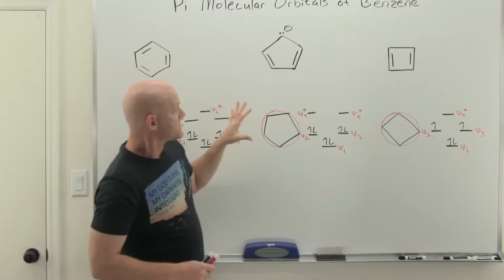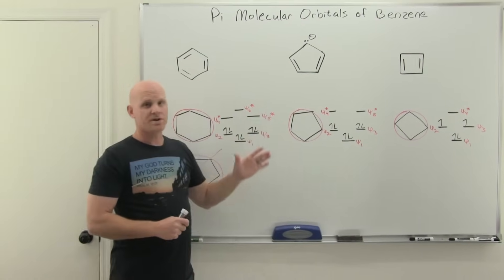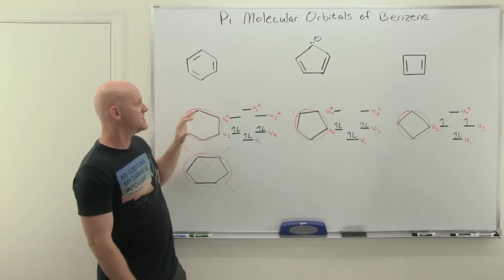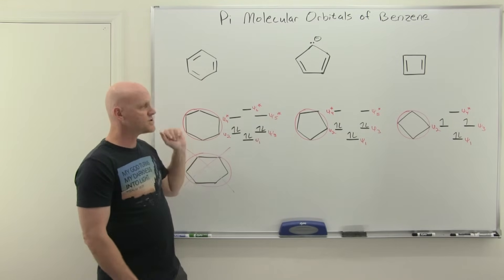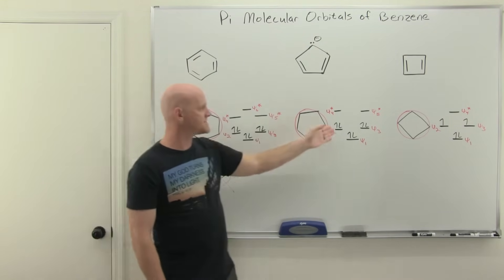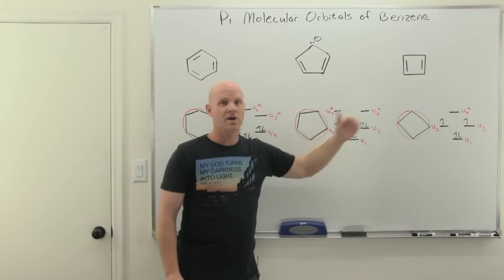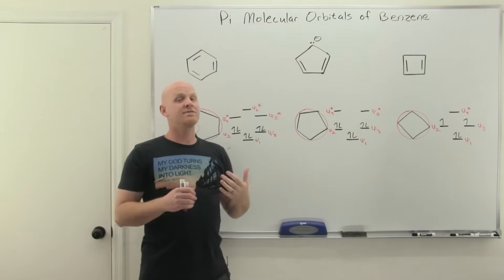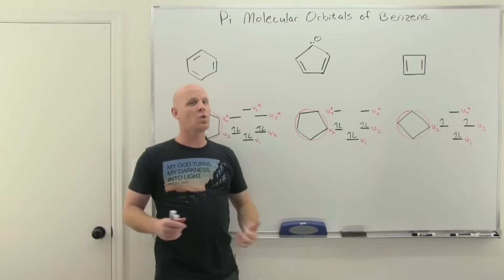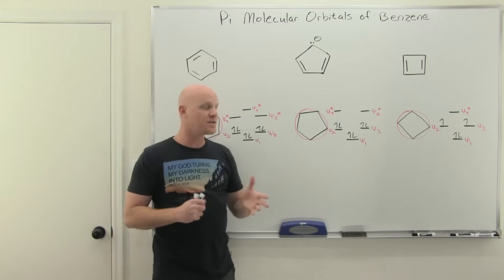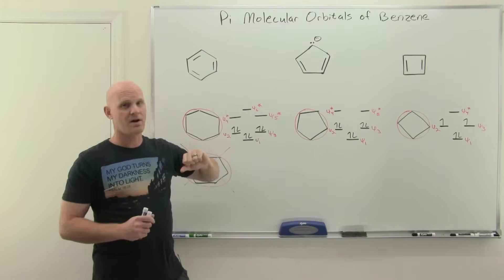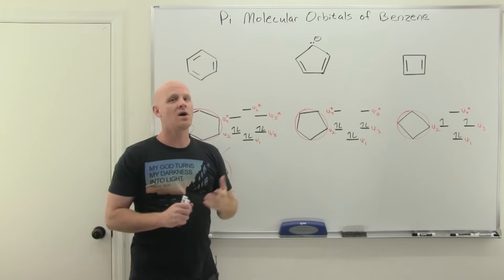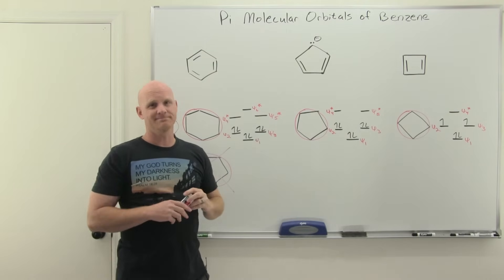So for any completely conjugated cyclic system, you just inscribe the polygon in a frost circle. Right where every vertex is corresponds to an energy level of one of the molecular orbitals, and you can predict what the MO diagram is going to look like. Now we haven't actually drawn the molecular orbitals themselves — we just know where the energy levels lie. But now we are actually going to draw the molecular orbitals for benzene.